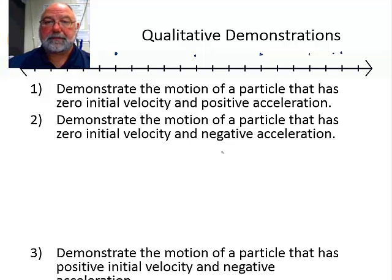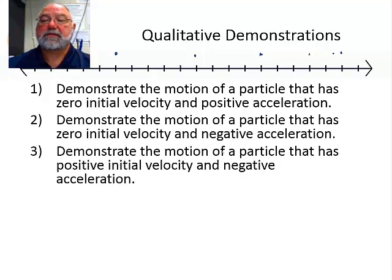Let's do our next one. Demonstrate the motion of a particle that has positive initial velocity and negative acceleration. That means I'm moving in the positive direction. So in one second, I do that. But I'm slowing down. And now I'm at rest. That would be positive initial velocity and negative acceleration.